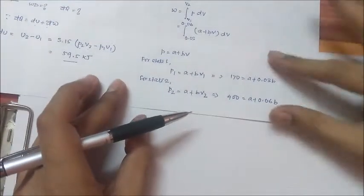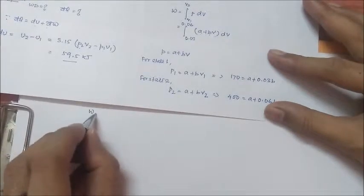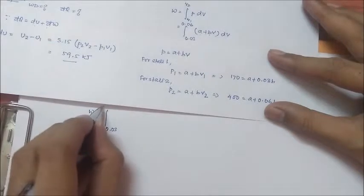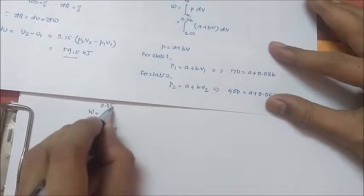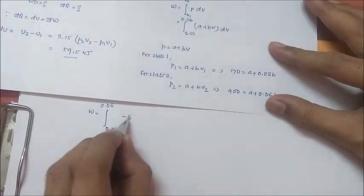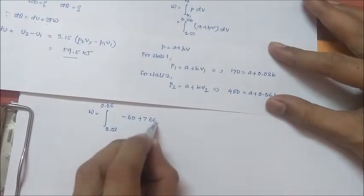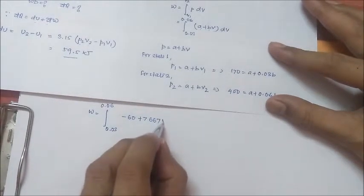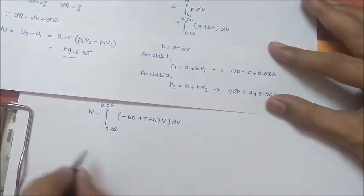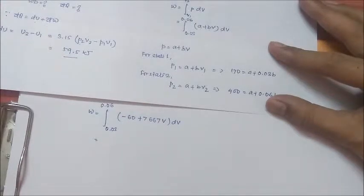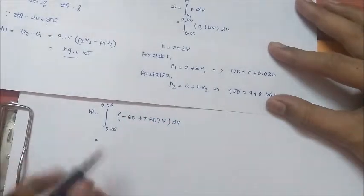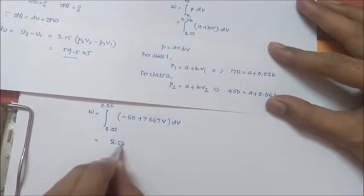So our work done equation will change to: w equal to integral 0.03 to 0.06 of (minus 60 plus 7667 v) dv. Now we can calculate this work done just by integrating this thing and it will come around 8.55 kilojoule.